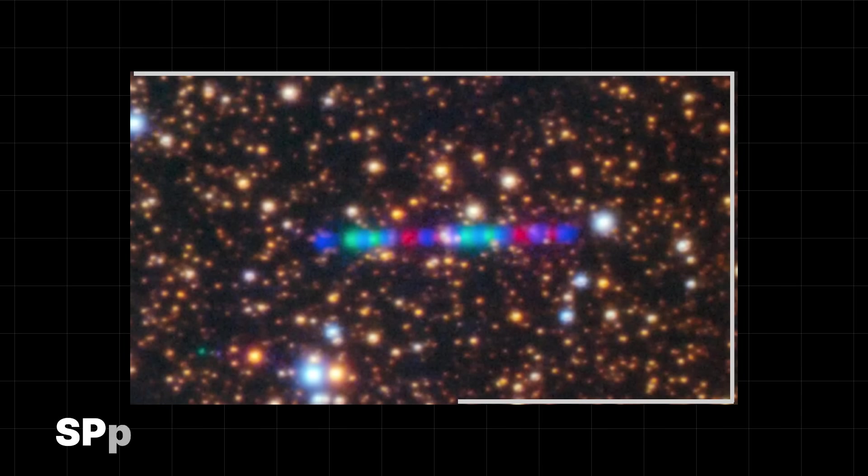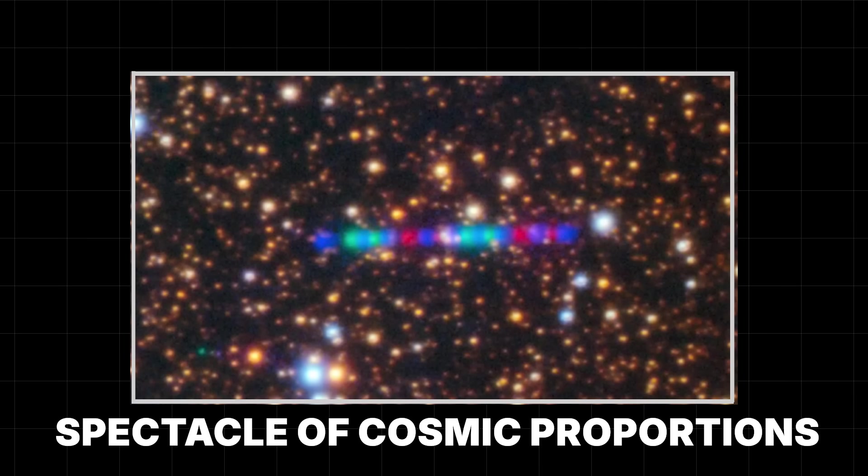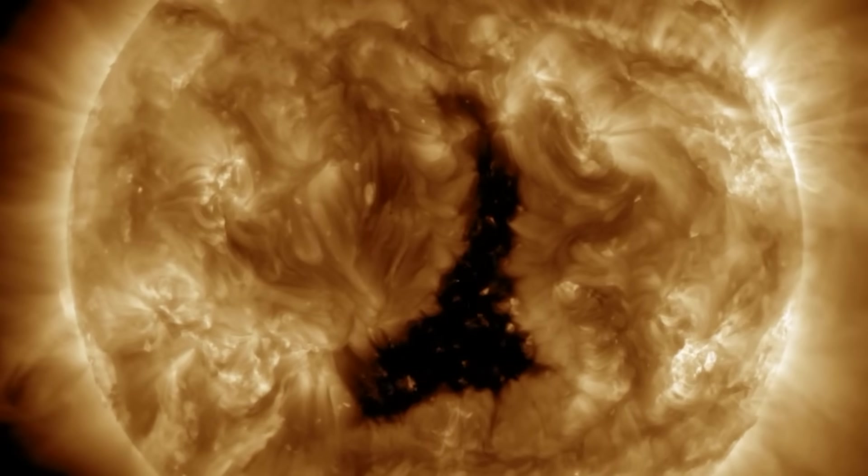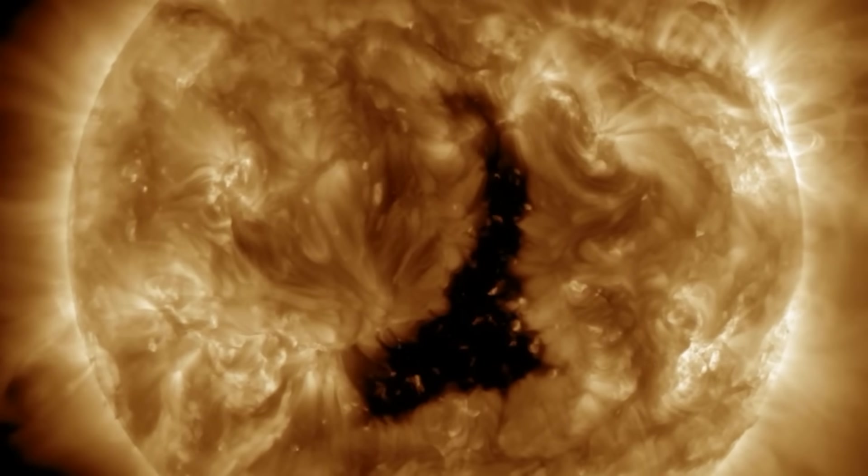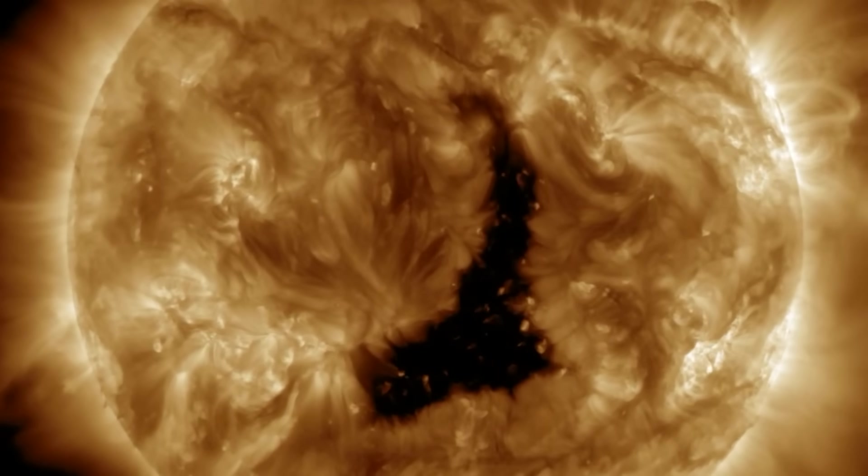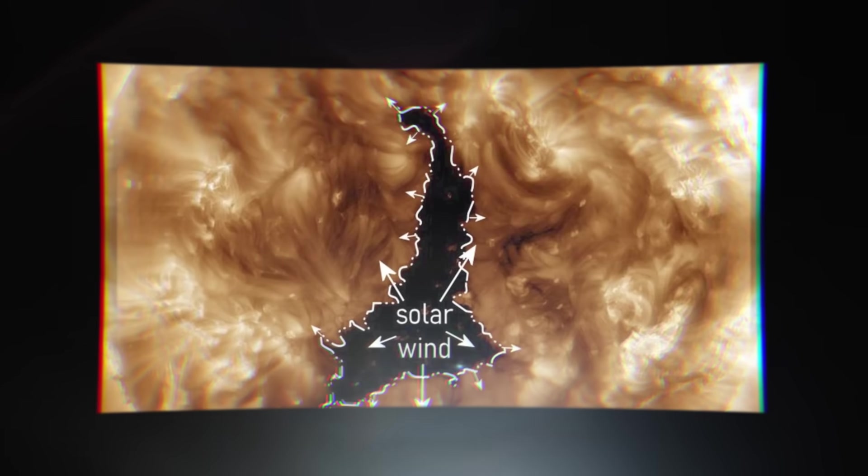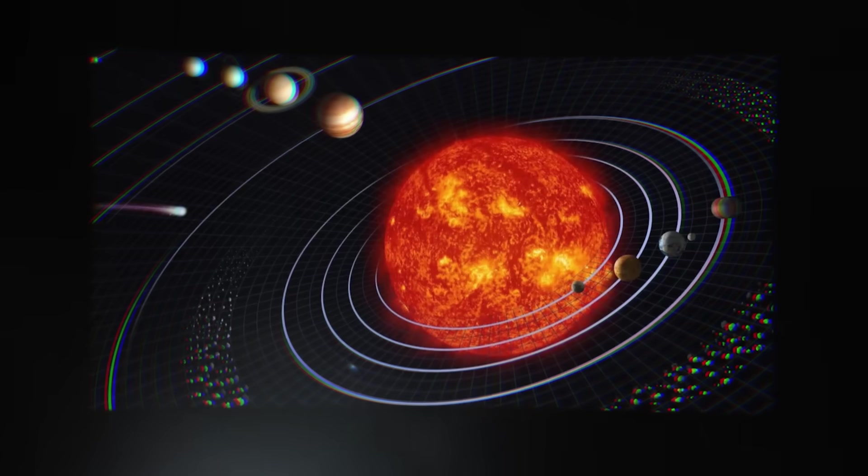What followed was a spectacle of cosmic proportions. A colossal dark void, a giant hole, began to stretch across the sun's fiery surface. This unprecedented event has left experts in utter disbelief, questioning the very fabric of celestial mechanics.